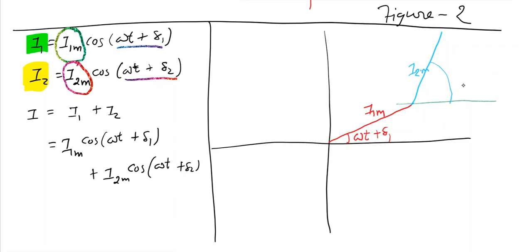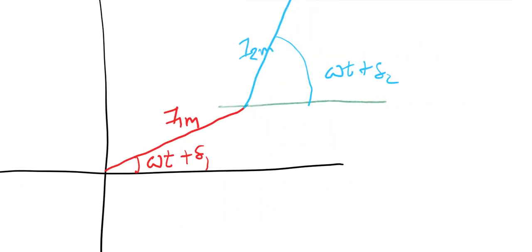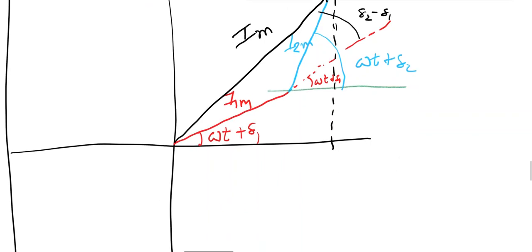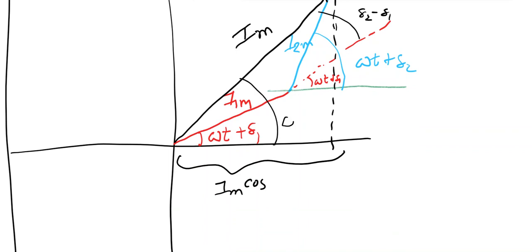This angle is ωt + δ2. Now if you extend the line of I1m, you will realize that this angle is ωt + δ1, and this angle is the difference of the two phases δ1 and δ2. Then I can say that this resultant line is the resultant vector Im. If I take the horizontal component of Im, I will get Im cos(φ), where φ is the resultant angle, and this is the resultant current i.